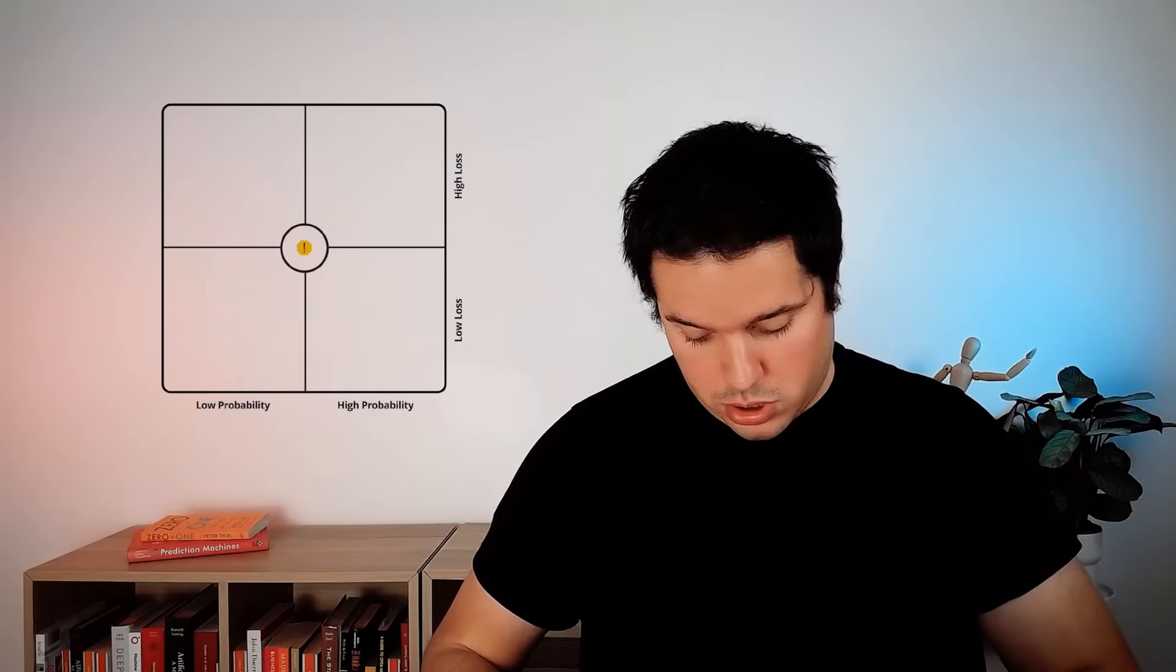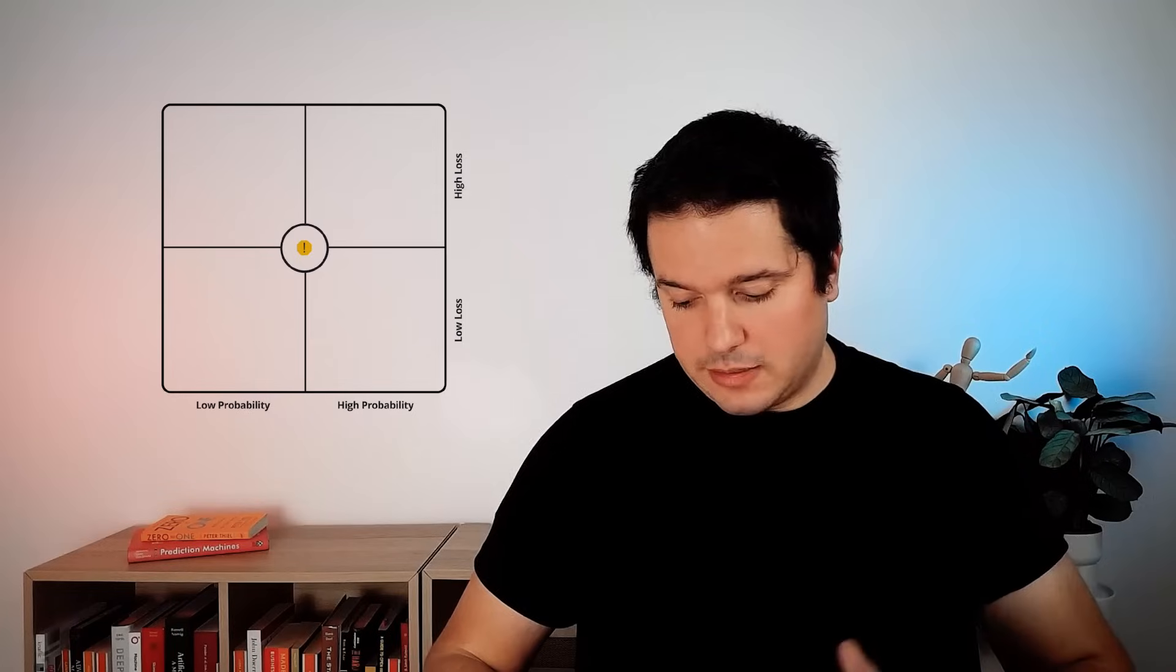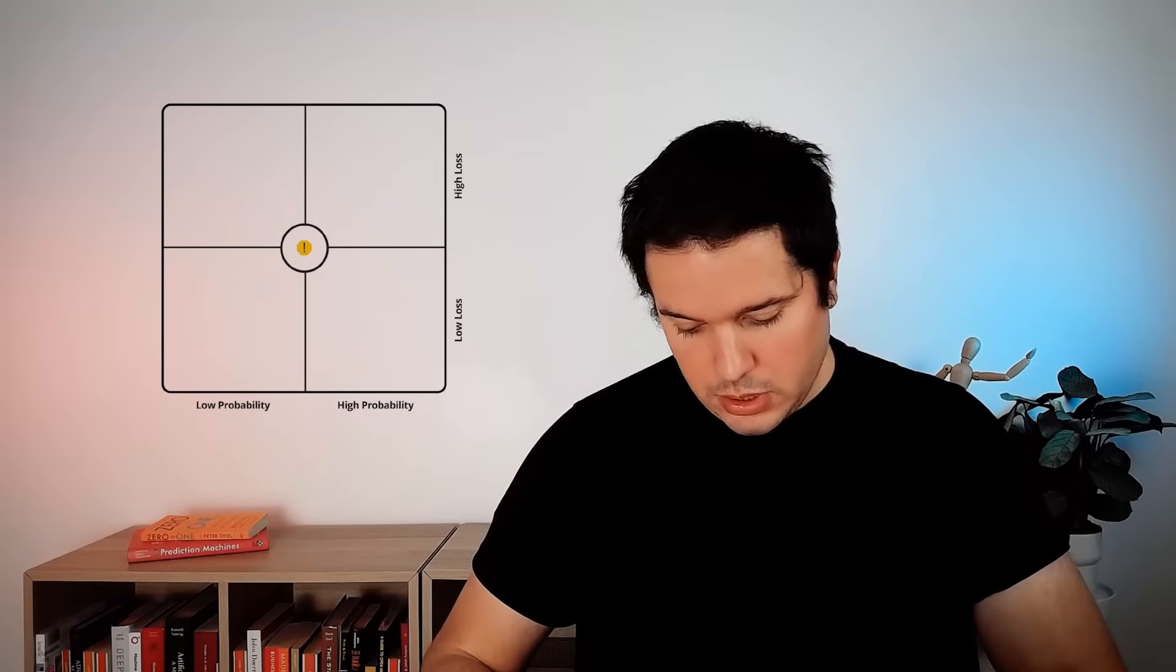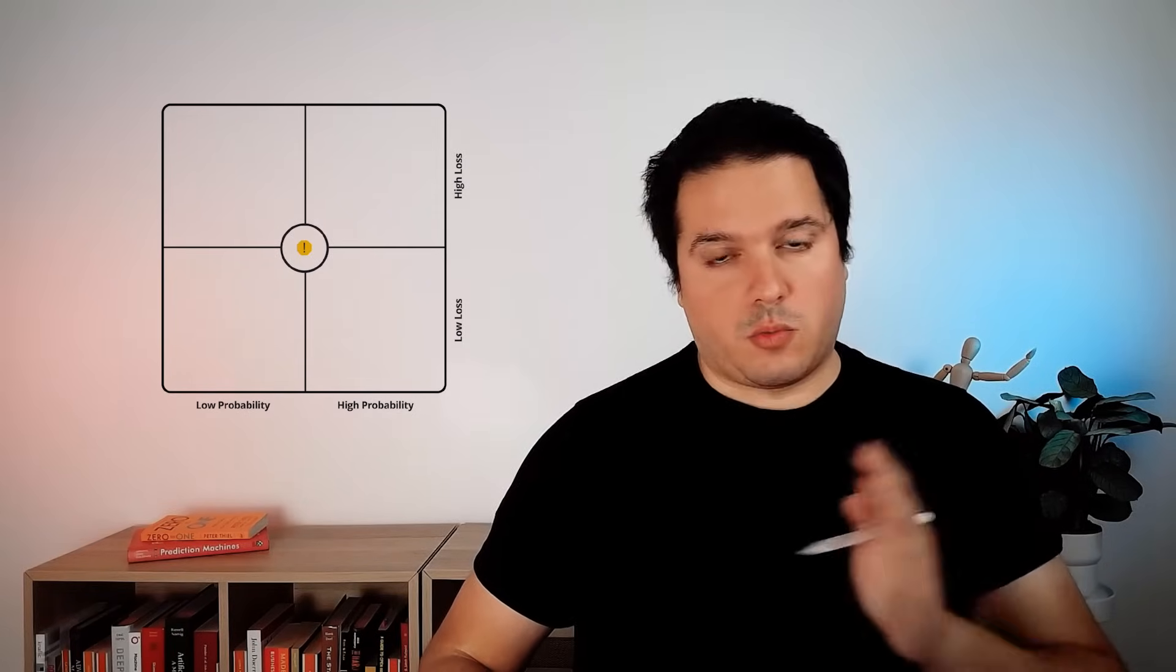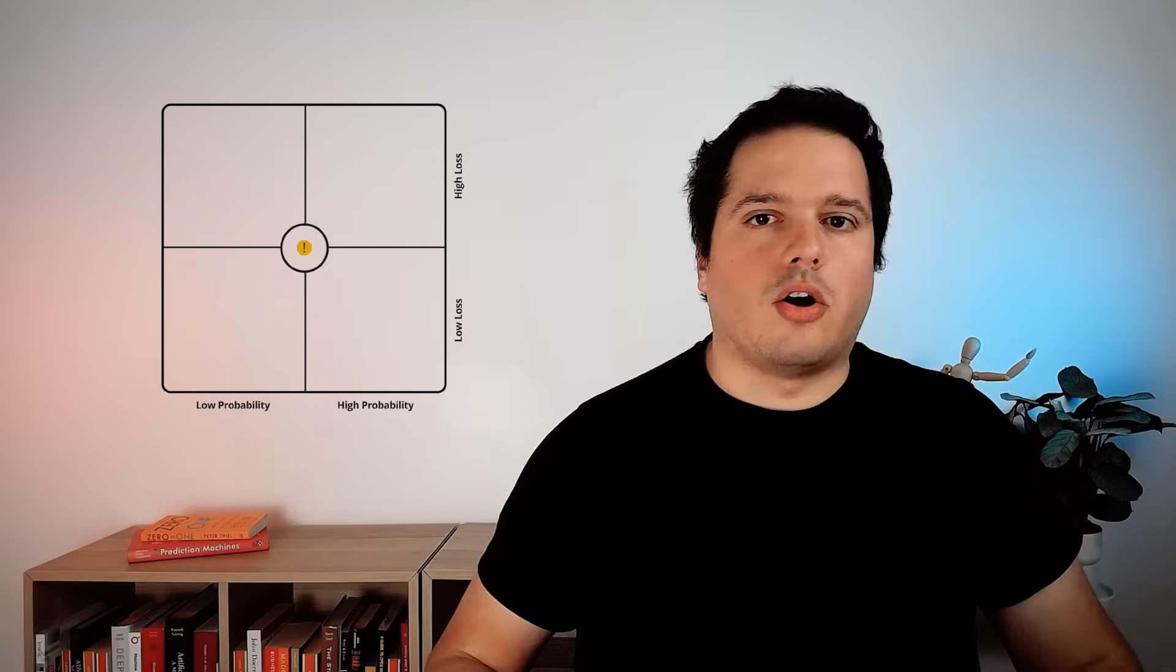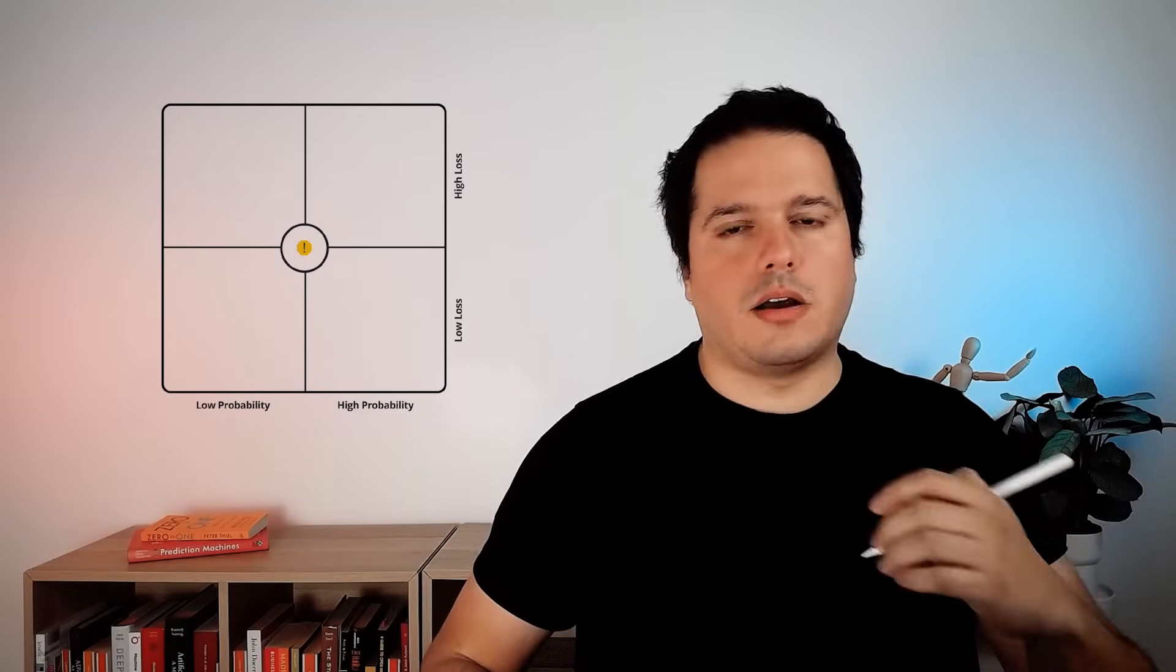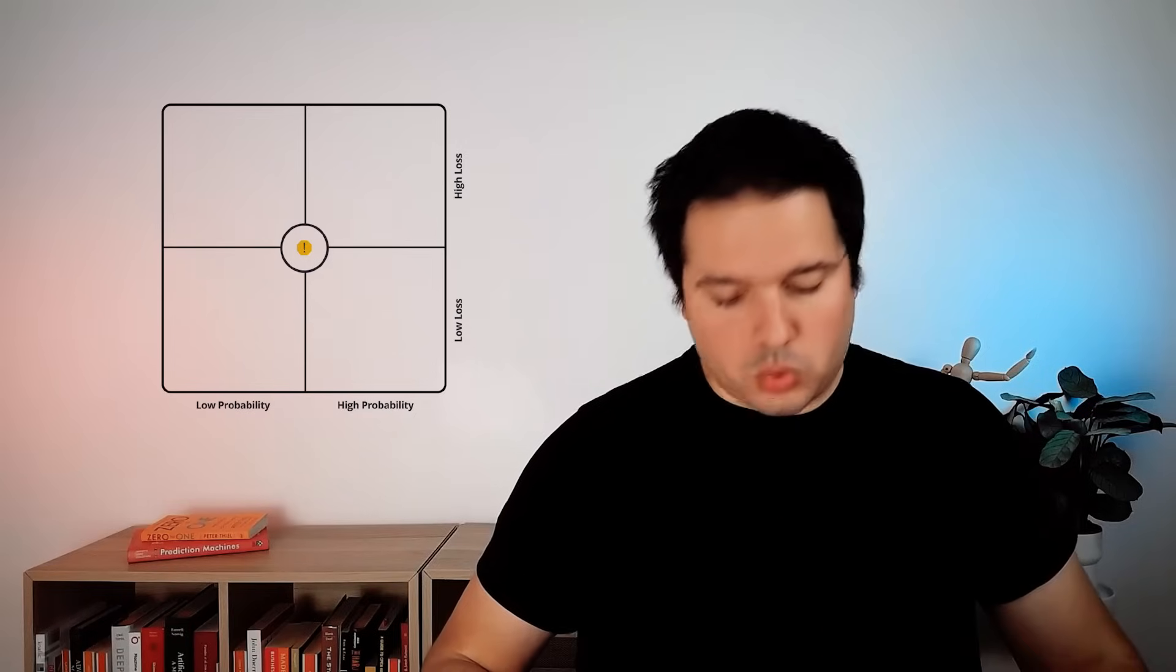This brings us to this tool that we designed as part of our day-to-night methodology that I call the traffic light of risk management. It's basically this matrix here where we have on one axis the probability of an event happening and on the other one, the loss if that event happens. And this helps us understand where a company is and what are the most critical points to tackle.